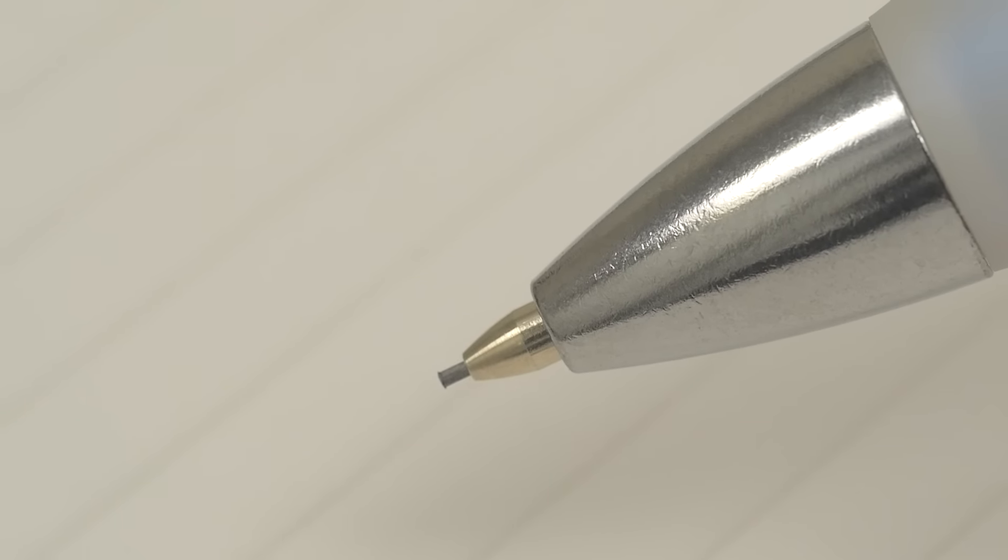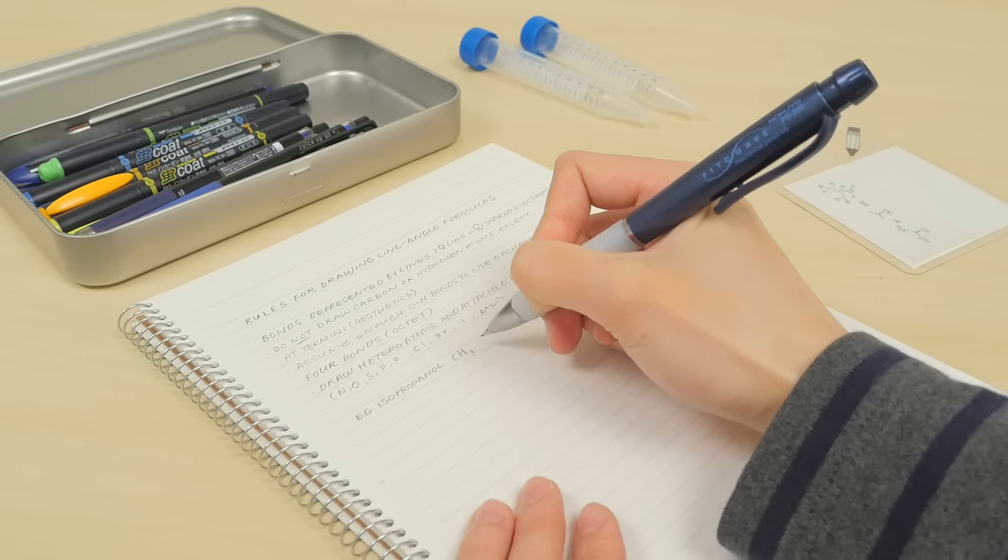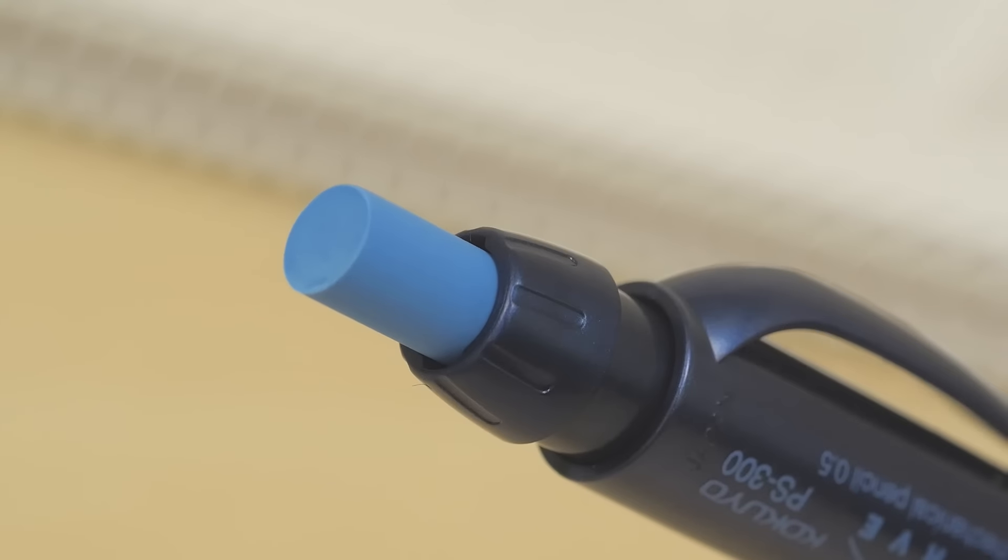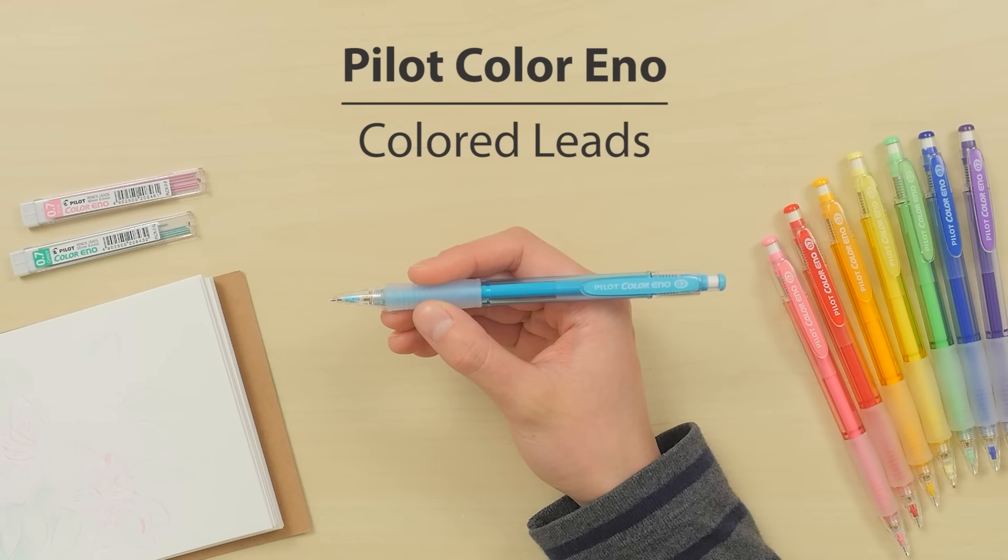A sliding lead sleeve helps protect the lead from breaking and lets you write longer between clicking the top push button. We also like the generously sized twist-up eraser. It's available in 0.5 millimeters and three colors.